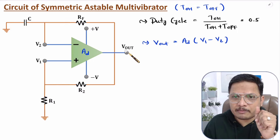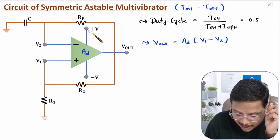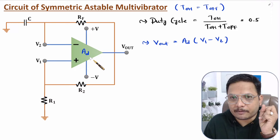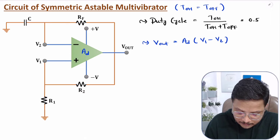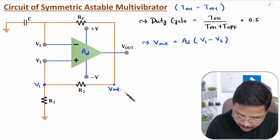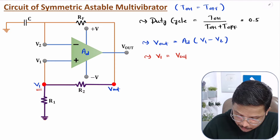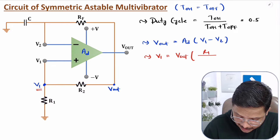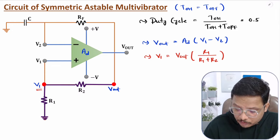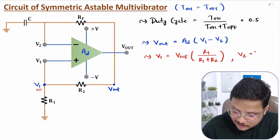Because the differential gain A_D is very high, at the output we will have only two possibilities: output can be plus V voltage or minus V voltage, which are the biasing voltages applied to the operational amplifier. V1 appears as per positive feedback, and based on the potential divider rule, V1 equals V-out multiplied by R1 divided by (R1 plus R2). V2 is the voltage across the capacitor, so V2 equals V_C.